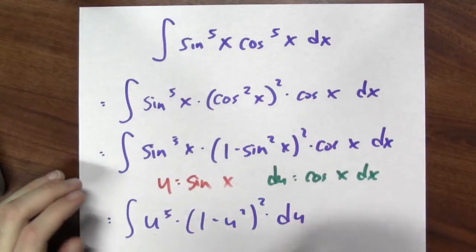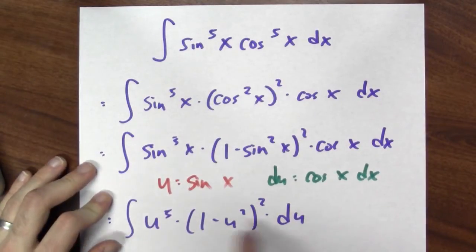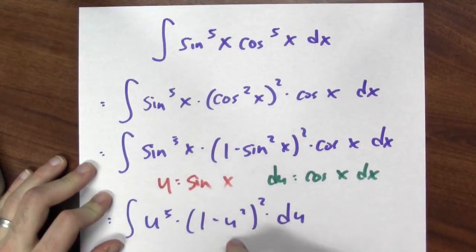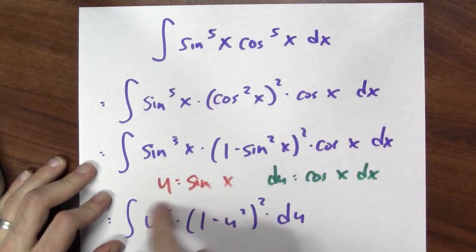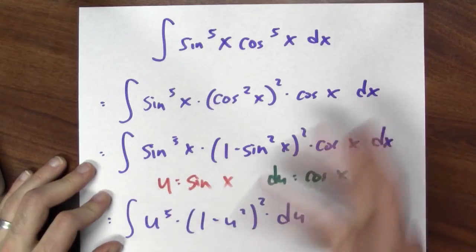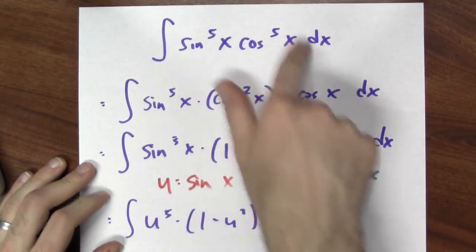Is that going to work? Yeah, I could definitely finish this off. I just expand this out, and then I get a polynomial in u. And I can anti-differentiate a polynomial in u, and then just replace u by sine of x to get the anti-derivative of sine of the 5th cosine of the 5th.